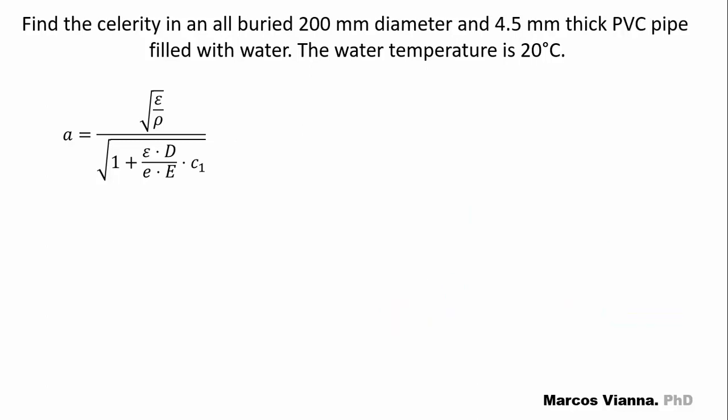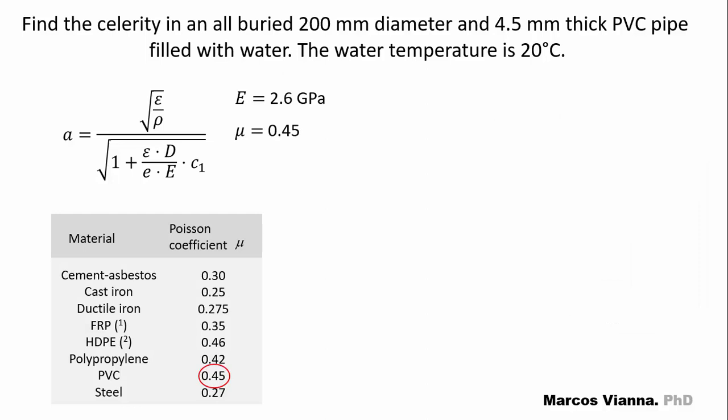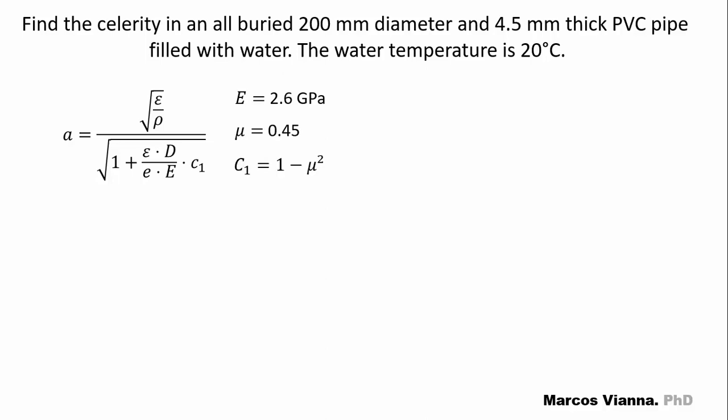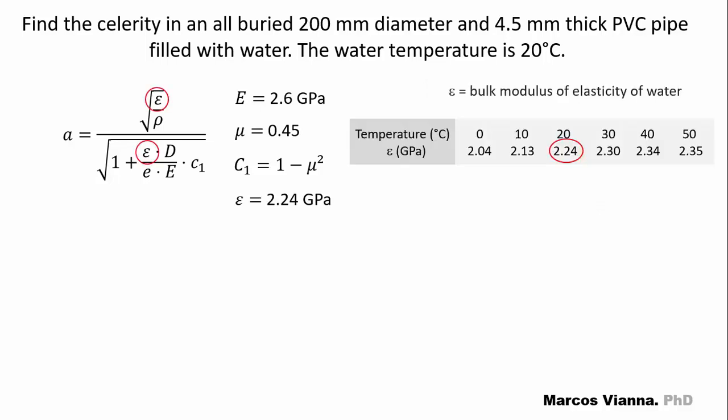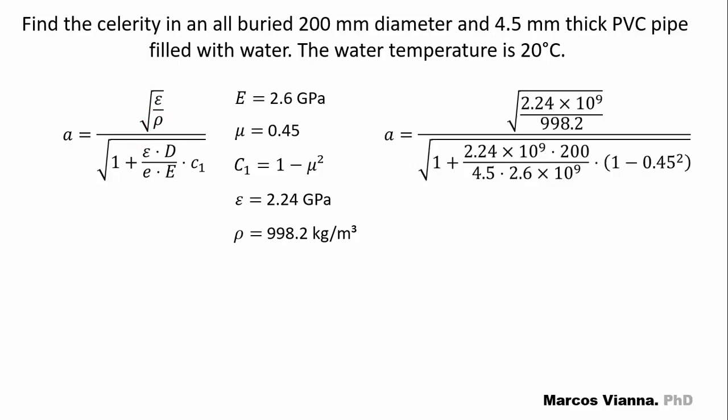Now let's see the case of a PVC pipe filled with water. Here is its elasticity modulus and its Poisson coefficient. This will be the C1 factor. And now the water characteristics. This is the elasticity modulus of water and this is its specific mass. We substitute the values and find this value. It's even slower than in the water.